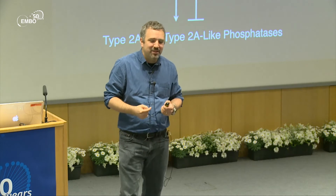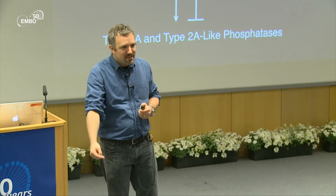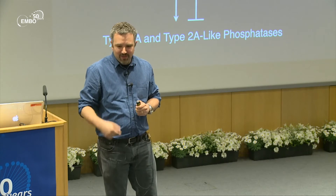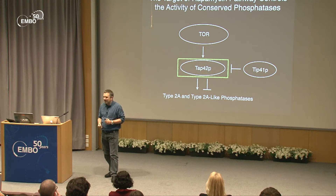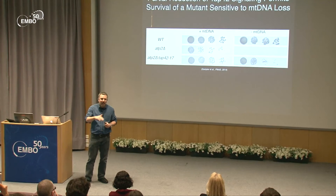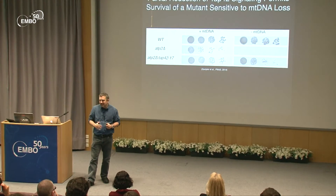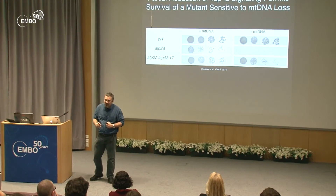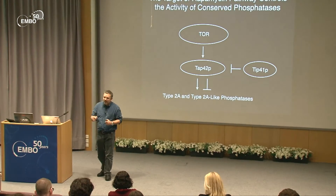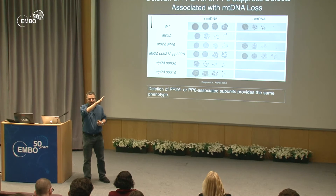Tap42 has a complicated relationship with these phosphatases — it is required for their folding and can also inhibit their activity. If overexpression of Tip41 inhibits Tap42 to benefit cells lacking mitochondrial DNA, then reducing Tap42 function should give the same result. Using a temperature-sensitive partial loss-of-function Tap42 mutant as a sensitized background, we see that if you drop mitochondrial DNA from these cells they die, but if you inhibit Tap42 we suppress this effect.